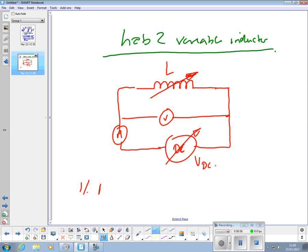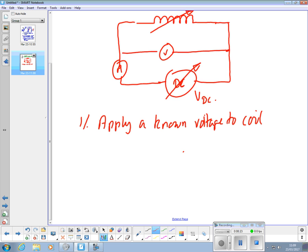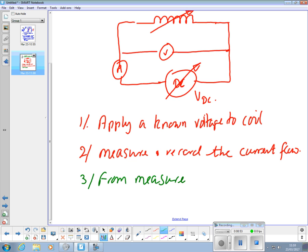One. Apply a known voltage to coil. Two. Measure and record the current flowing. And that's it for the DC. From back, so from measurements, find resistance of inductor.